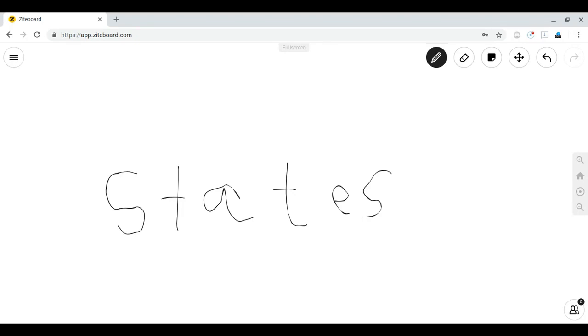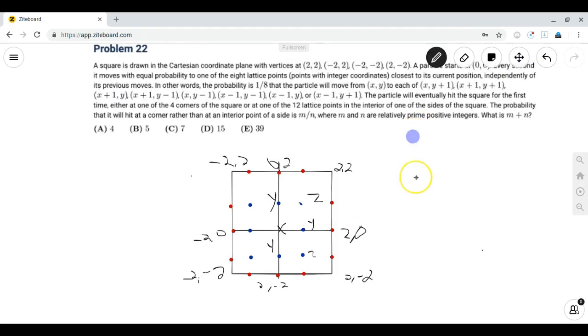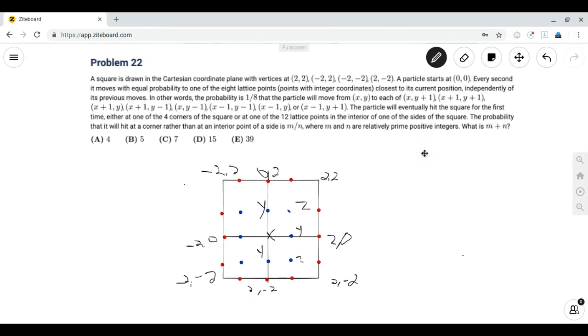So the best way to teach it is obviously through problems, so we're gonna go to our first problem. This problem is problem number 22 from the 2017 AMC 12A. The problem reads: a square is drawn in the Cartesian coordinate plane with vertices (2,2), (-2,2), (-2,-2), and (2,-2). A particle starts at the origin (0,0), and every second it moves with equal probability to one of the eight lattice points closest to its current position, and here I have indicated the lattice points in blue.